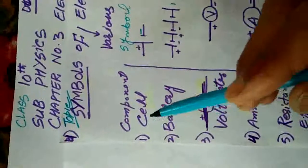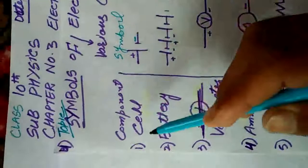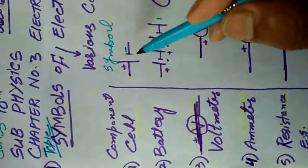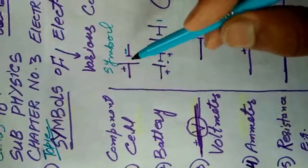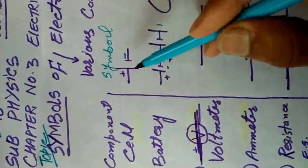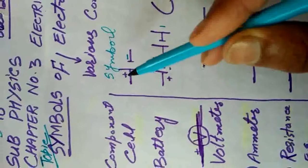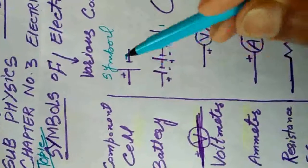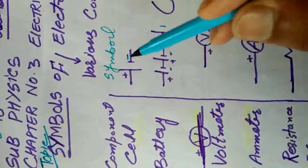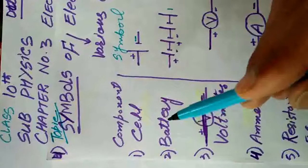Let us see the components and their symbols. The first component is the cell. This cell is represented by a symbol in an electric circuit — we take one long line and one short line. The long line represents the positive terminal and the short line represents the negative terminal. So we represent the cell using plus and minus.